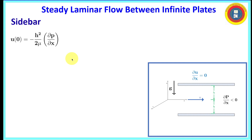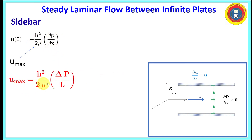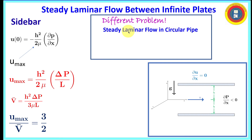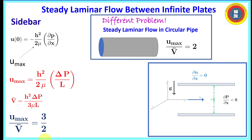As a sidebar, we can express maximum velocity — occurring at y equals zero — in terms of pressure drop per unit length as well. Taking the ratio of maximum velocity to average velocity gives a clean result of three-halves. For comparison, in steady laminar flow through a circular cylinder, the maximum velocity divided by average velocity is equal to 2 — a different geometry but a similar type of result.